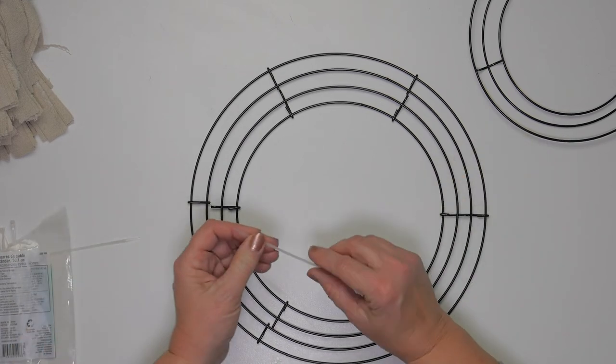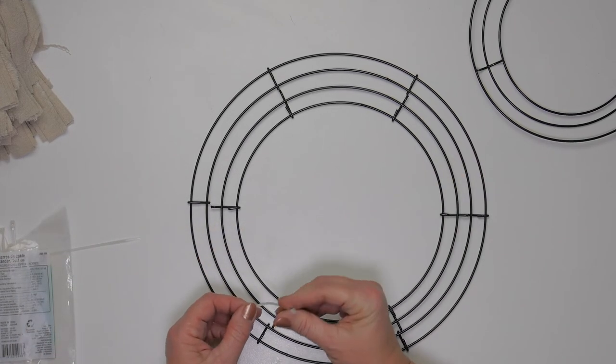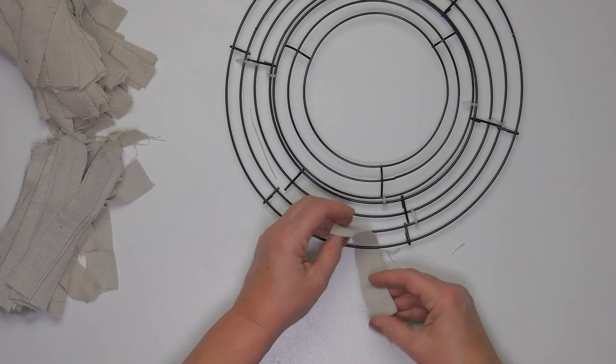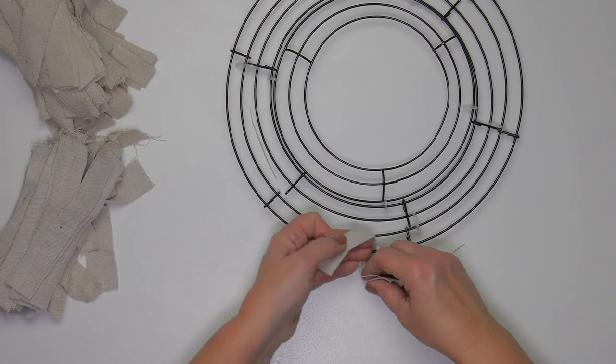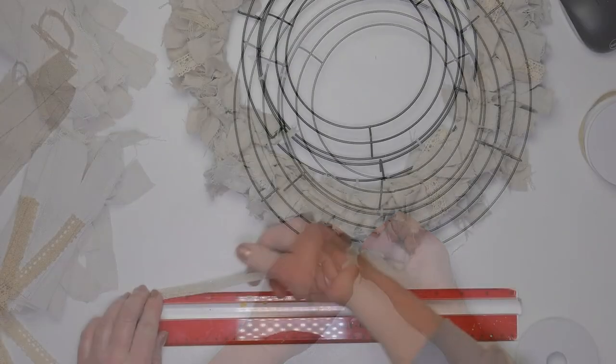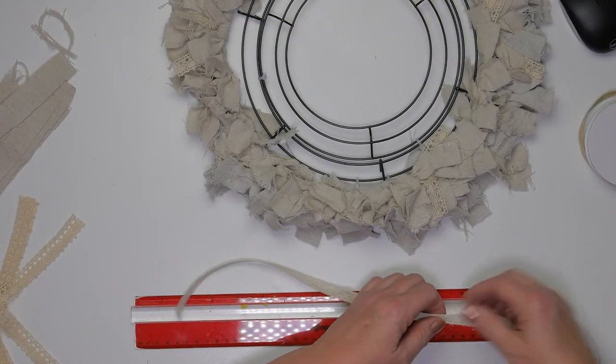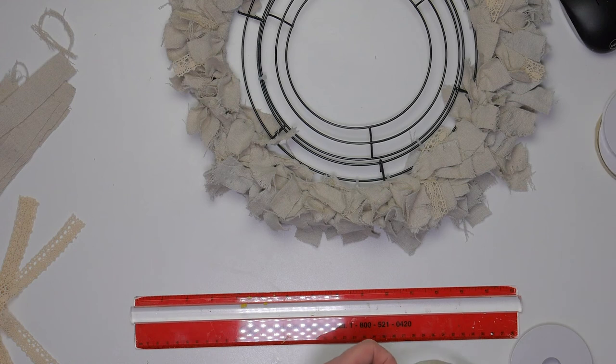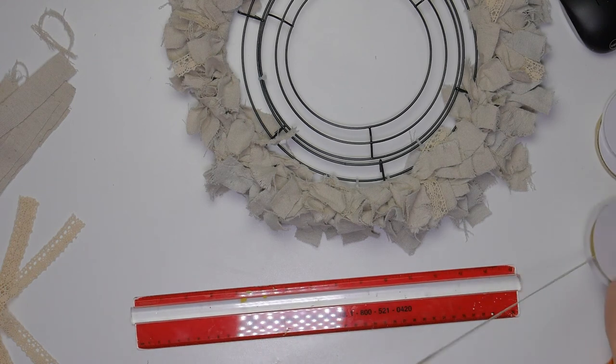So this next project, I actually had this wreath that I took apart because I wanted a piece of it for something else. And so I ended up using zip ties to kind of zip pieces of it back together. And I cut strips of the drop cloth and started to tie them around the wreath.